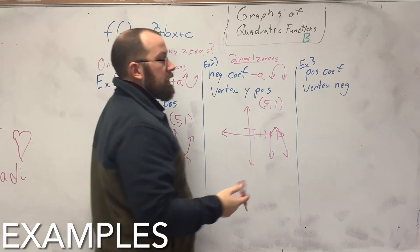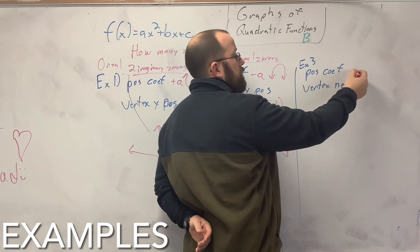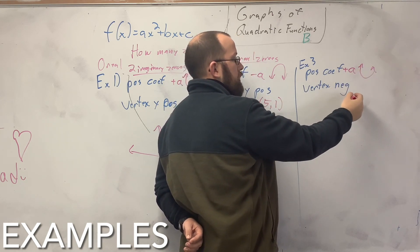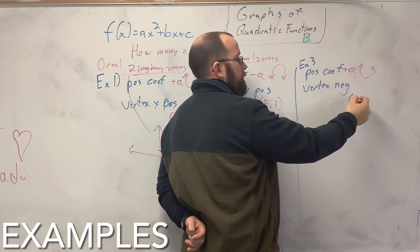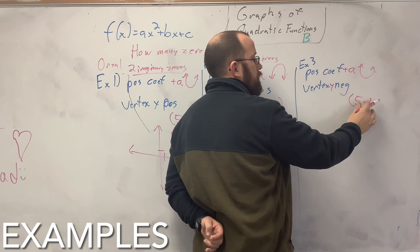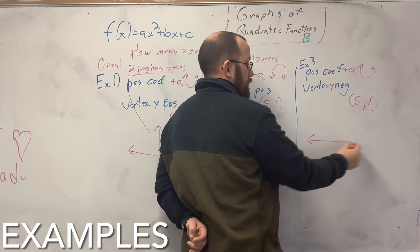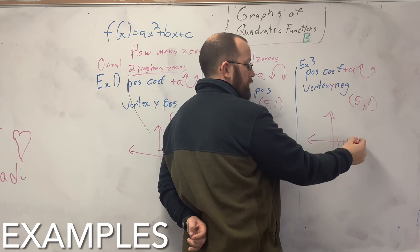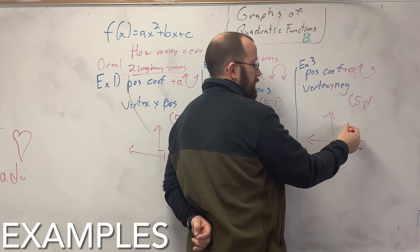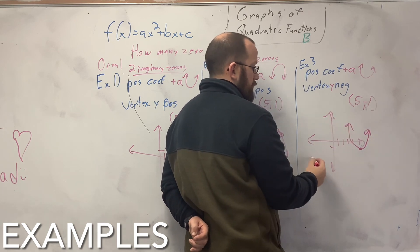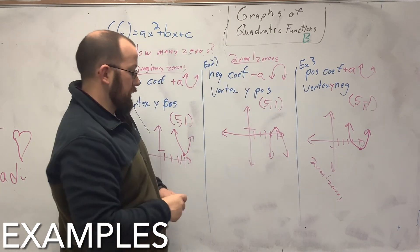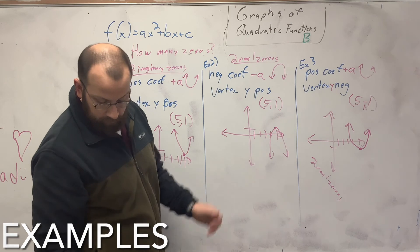And then my last one over here is I have a positive coefficient, which gives me a plus A, smiley face. And the vertex is negative. So let's go with x = 5. Y is negative, so negative 1. Graph it up, 1, 2, 3, 4, 5 at negative 1. And I have a smiley face. So it goes through the x-axis twice. So I have two real zeros. And that's how you find it. If you need to draw it out, go on ahead. It's not that hard.